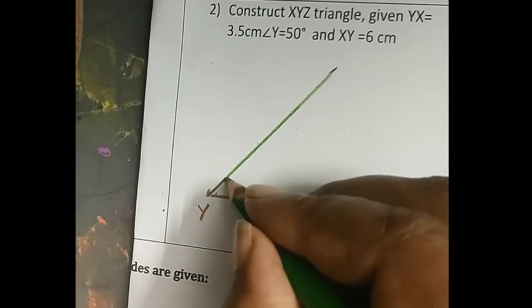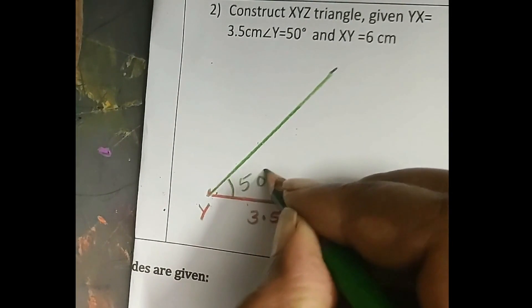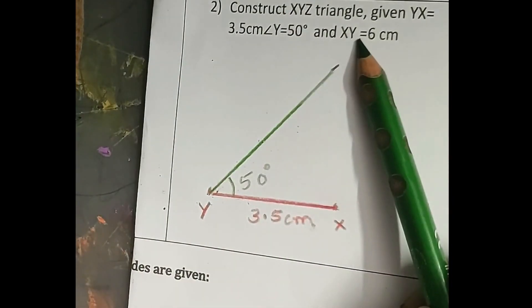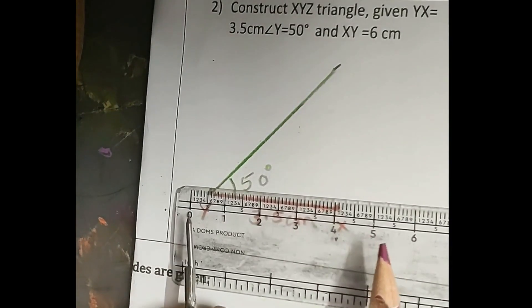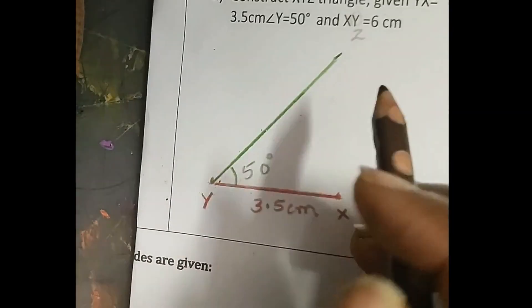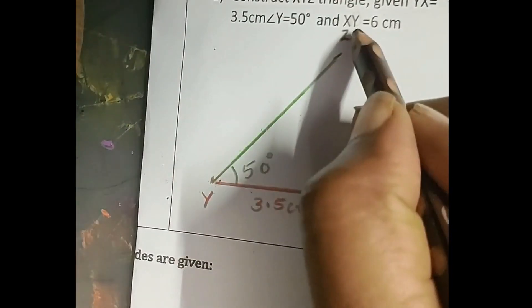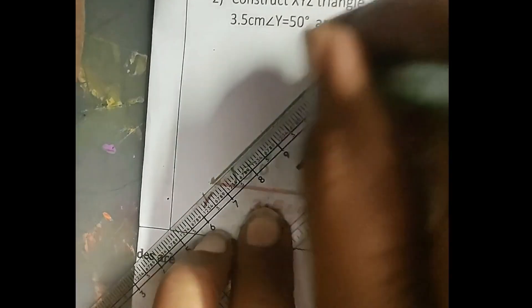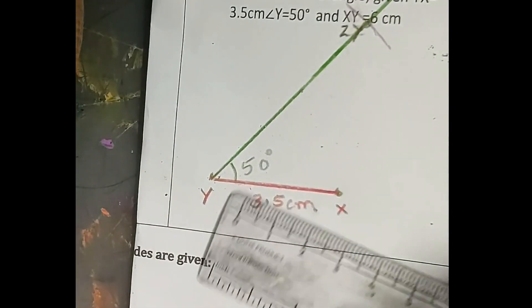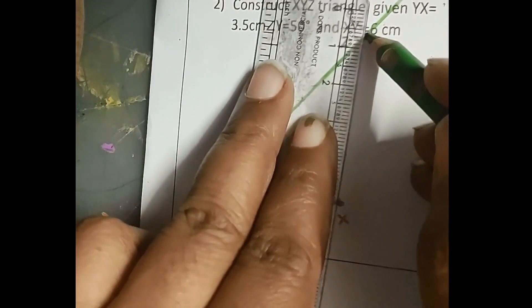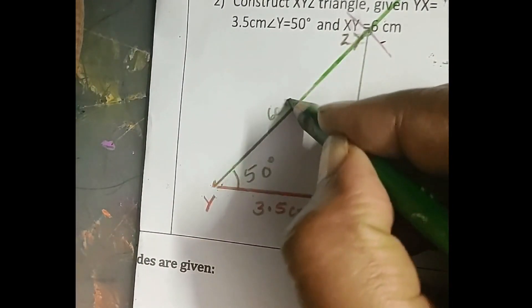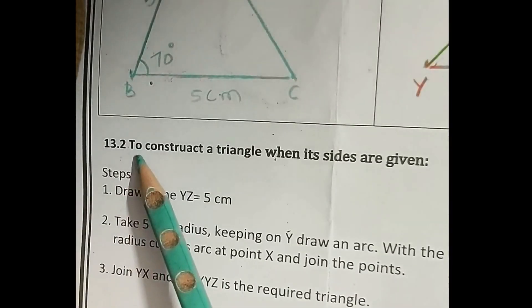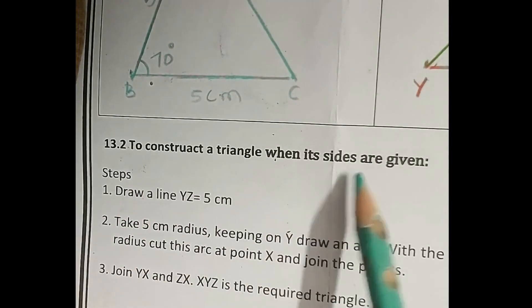This is angle 50 degrees. Next we have to draw ZY of 6 cm. First we measure 6 cm in the compass. Note: there is a misprint — it should be ZY, not XY. We draw an arc, extend the line, and join these two points. ZY is 6 cm.